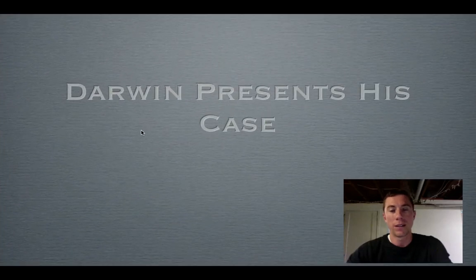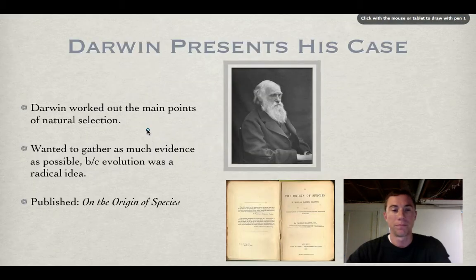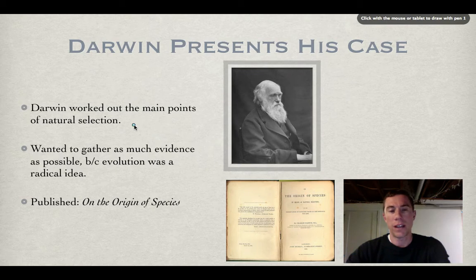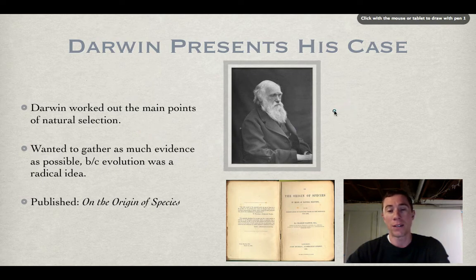Before Darwin presented his case on the theory of evolution, he really made sure that he worked out all the main points of natural selection. He used other scientists' ideas from before his time to come up with the theory of evolution. But during his time, it was quite extreme — the actual thought that organisms could change over time. So he really wanted to make sure that he worked out all the main points before he presented his case.